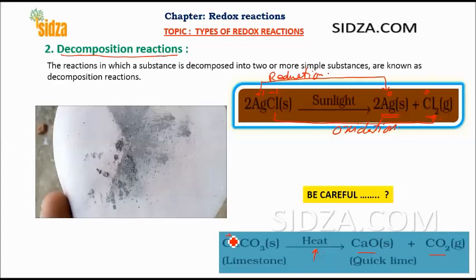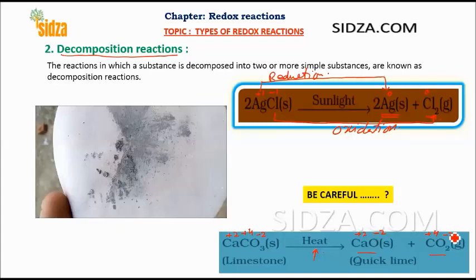Why is CaCO₃ decomposition not a redox reaction? Because there is no change in the oxidation number of any element. Calcium is plus two, carbon is plus four, and oxygen is minus two — both in the reactant and in the products. So there is no change in oxidation number for calcium, carbon, or oxygen. This is a decomposition reaction but not a redox reaction.